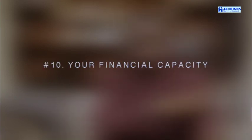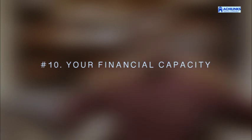The tenth paragraph focuses on your financial capacity — the funds you have available, how you are going to finance yourself, how you are going to pay your tuition, and if you are going with family, how you will pay for their accommodation, feeding, and so on. All of these should be covered in the tenth paragraph.